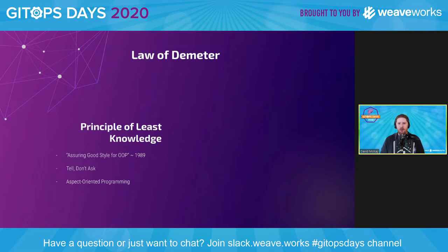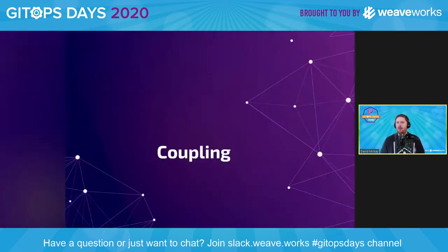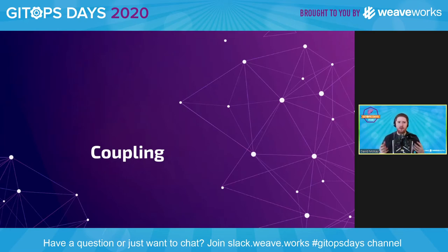Aspect-oriented programming is a type of programming that spun out as an alternative to OOP or functional. It has a concept called a point cut that allows you to inject new functionality into existing code without modifying the existing code. What I'm really talking about today is coupling and how we build coupling into our declarative code, whether that be GitOps or otherwise.